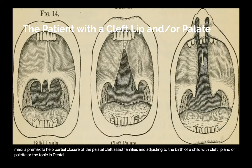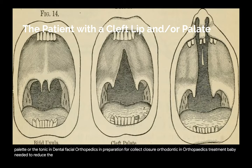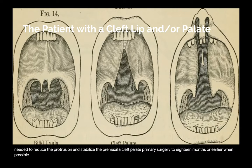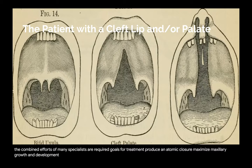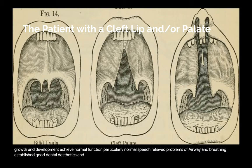Orthodontic and dental facial orthopedics: in preparation for cleft closure, orthodontic and orthopedic treatment may be needed to reduce the protrusion and stabilize the pre-maxilla. Cleft palate: primary surgery to close the palate is usually undertaken by the age of 18 months or earlier when possible. Goals for treatment include producing anatomic closure, maximizing maxillary growth and development, achieving normal function particularly normal speech, relieving problems of airway and breathing, and establishing good dental aesthetics and functional occlusion.